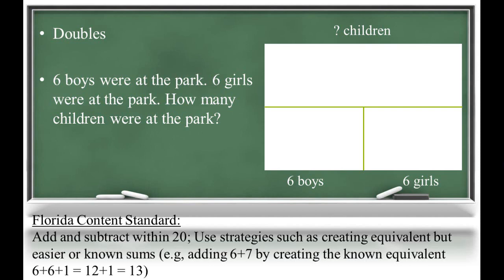Visualizing doubling allows students to better understand the connection to the number sentence and the sum. Students can model real-life examples to see this. For instance, six boys were at the park, six girls were at the park. How many children were at the park? What do you notice about the two groups? They are the same size or equal, and the two equal parts are added to make the whole.